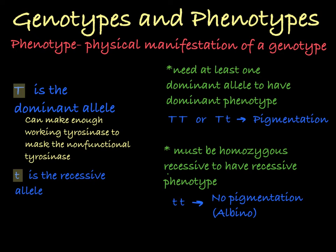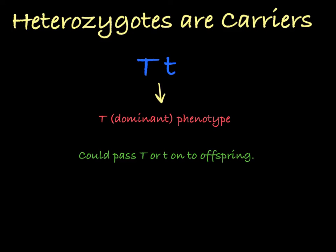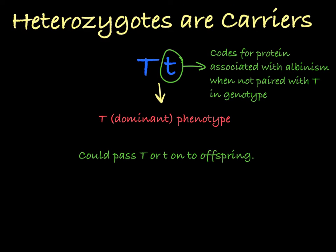It's customary, as we've done in this example, to make the dominant allele a capital letter and the recessive allele a lowercase of the same letter. Because heterozygotes contain both alleles but have the dominant phenotype, they are said to be carriers of the recessive allele. They don't show the recessive phenotype, but they could pass on the recessive allele to their offspring. In this case, the heterozygote is a carrier for albinism, a disease that results in a lack of pigmentation in the hair, skin, and eyes.